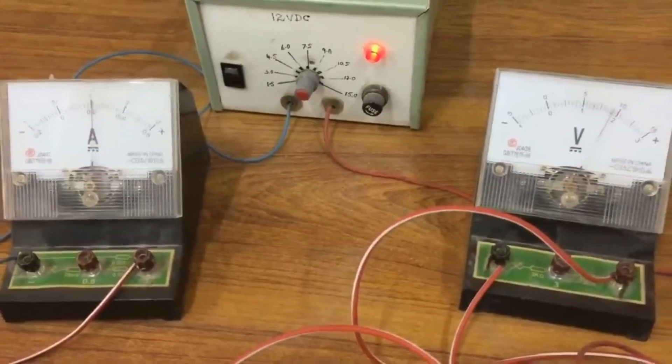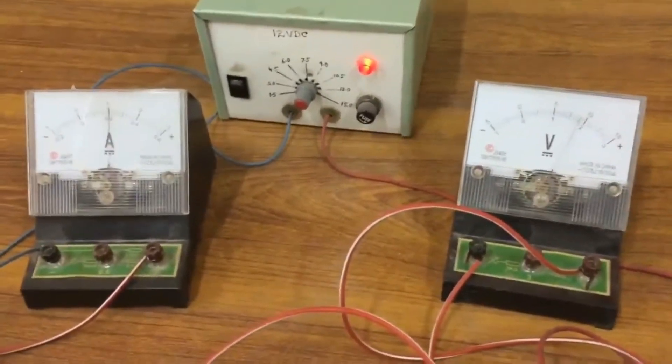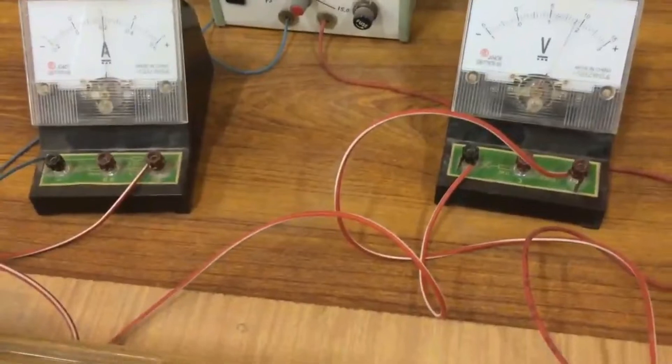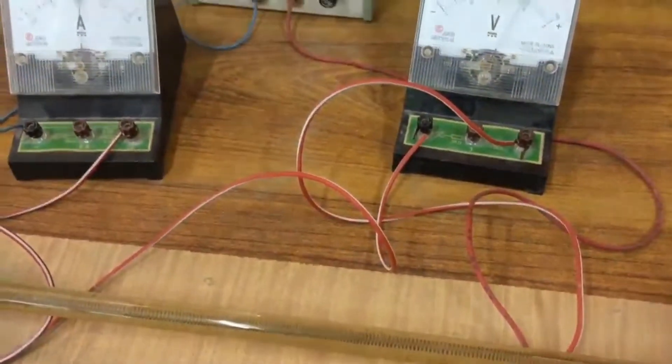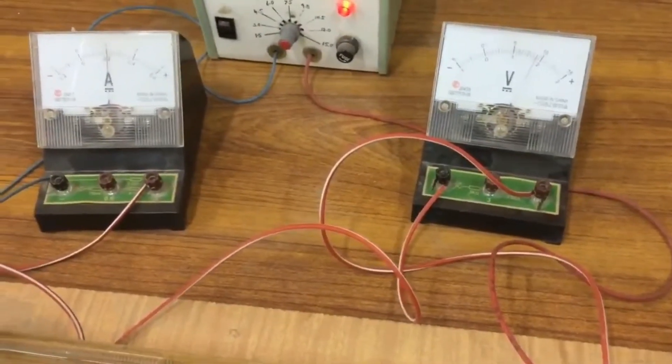The wire in the voltmeter has been connected with the positive 15 volts knob. So you have to read the upper scale which gives the maximum of 15 volts. Same goes for the ammeter.